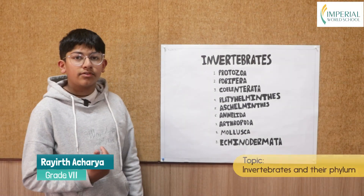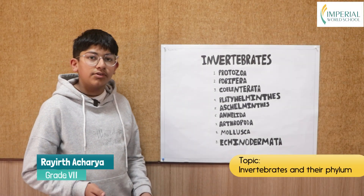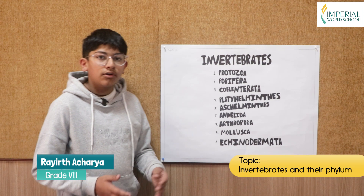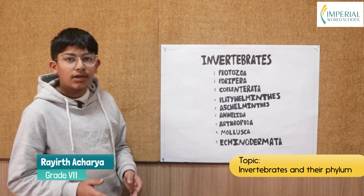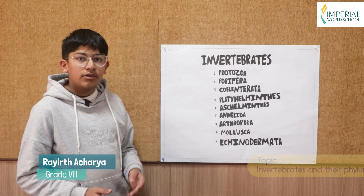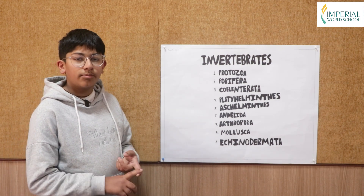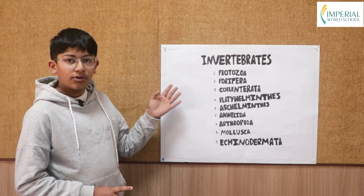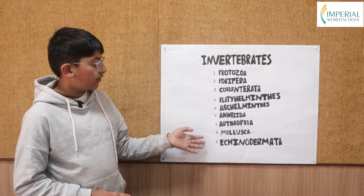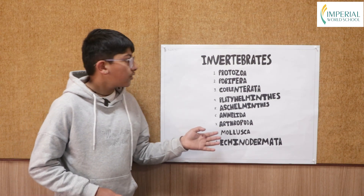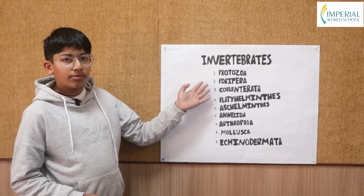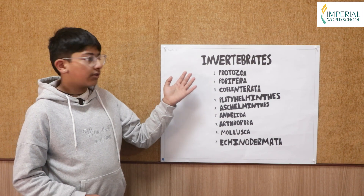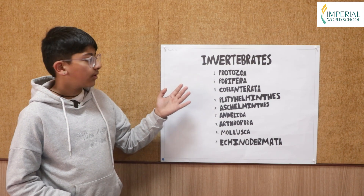Hello everyone, my name is Rerath Acharya, and in this video I'm going to be talking about invertebrates and their phylums. In the animal kingdom there are two sub-kingdoms: vertebrates and invertebrates. An invertebrate is a species that doesn't have a vertebral column.